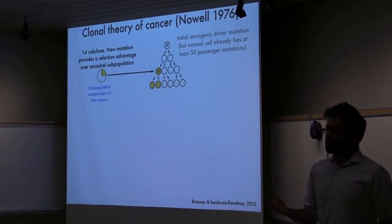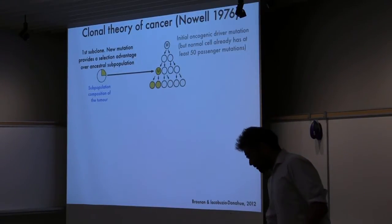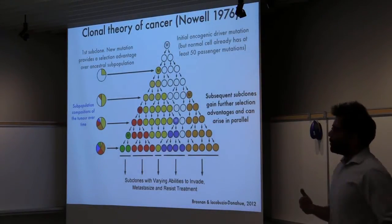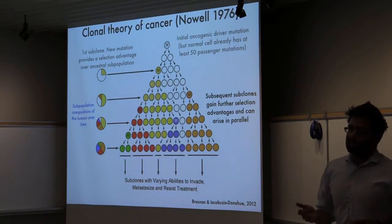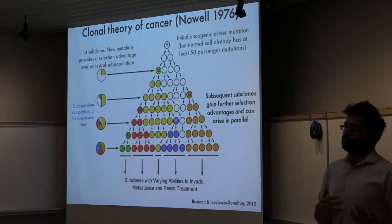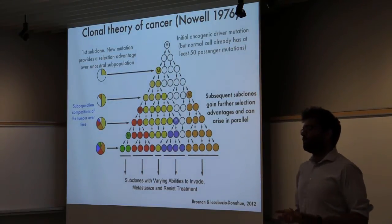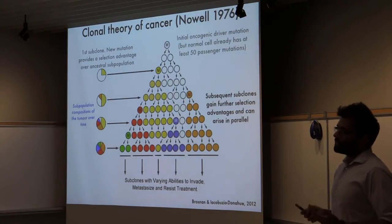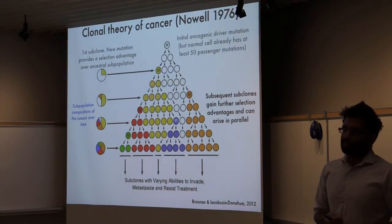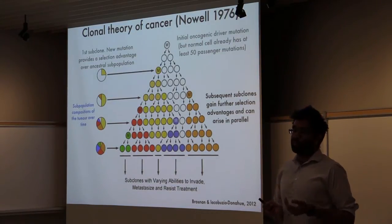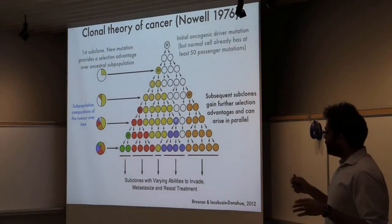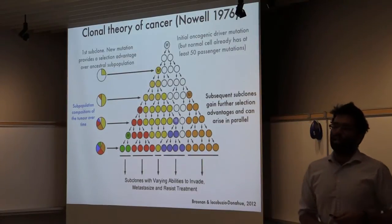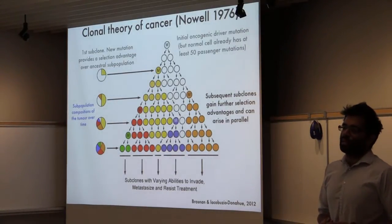This process doesn't happen just twice — it can happen over and over again. And then at the end, when a tumor is diagnosed, you have multiple subpopulations with distinct but related genotypes. Each of those different genotypes gives those different subpopulations differing abilities to invade, metastasize, and to resist treatment. The problem I'm working on, subclonal reconstruction, is: given one or a small number of bulk tumor samples, can we figure out what those different genotypes present in the sample are?